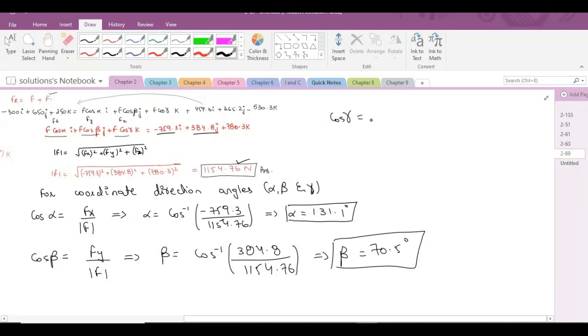And now for gamma. Cos gamma equals Fz over the magnitude of force F, so it equals 780.3 divided by 1154.76. So from here, after taking the cos inverse, gamma equals 47.5 degrees. So this is our second answer.